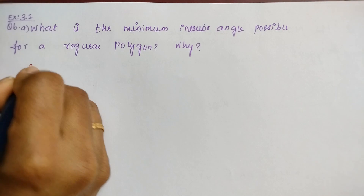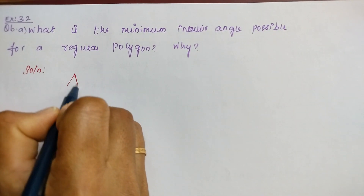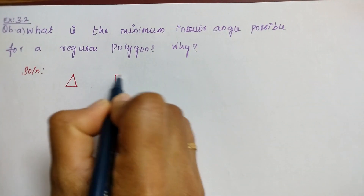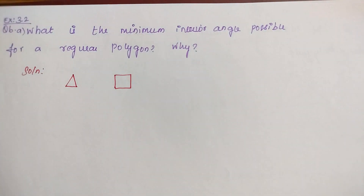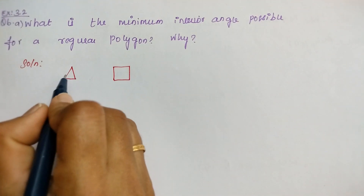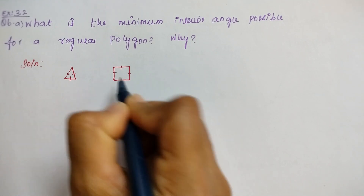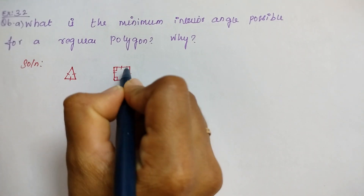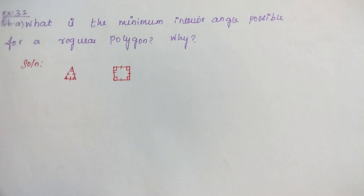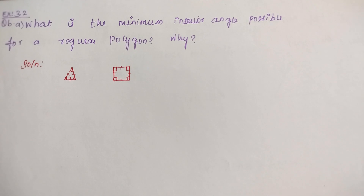Here we can take an equilateral triangle. This is an equilateral triangle, and I am taking the square also. These two are regular examples of regular polygons. Here all the angles and sides are equal for both the figures. For square also, 4 sides are equal and 4 angles are equal. And for this equilateral triangle, all 3 sides are equal.